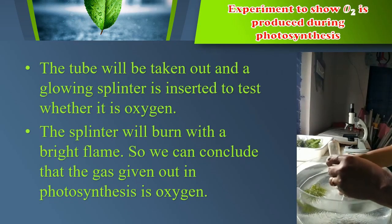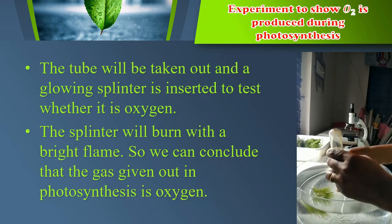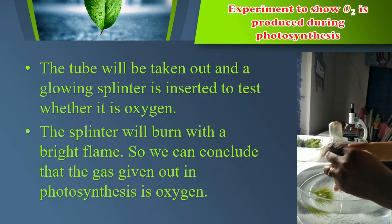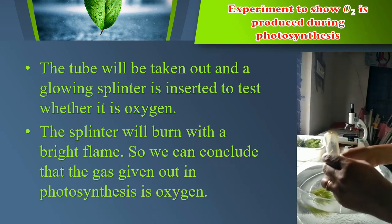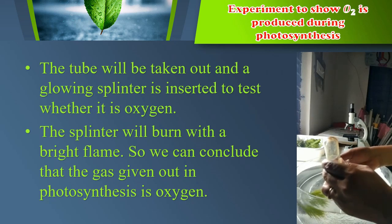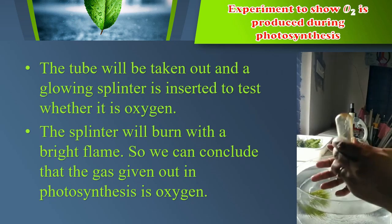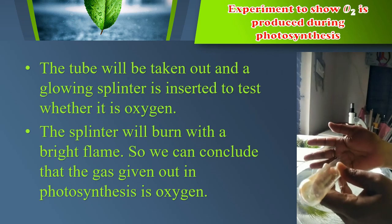The tube will be taken out and a glowing splinter is inserted to test whether the collected gas is oxygen. The splinter will burn with a bright flame, so we can conclude that the gas given out in photosynthesis is oxygen.